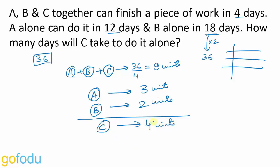So C can do 4 units of work in 1 day, and we have to calculate how many days will C take to finish 36 units of work. So 4 units get done in 1 day. 36 units will get done in 36 upon 4, or 9 days. Moving on to the next question.